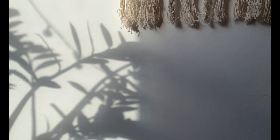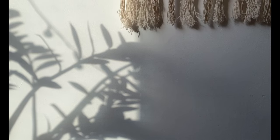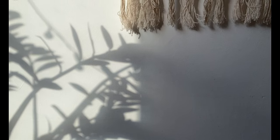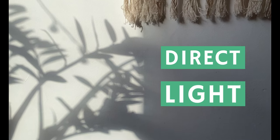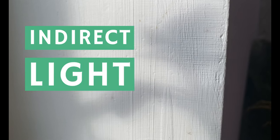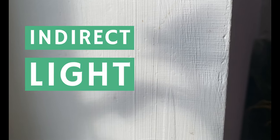Another way to know if your plant is receiving direct or indirect sunlight is to look at the shadow. If the shadow of your plant is very sharp and well defined, she is receiving direct sunlight. If during the day your plant has a more fuzzy shadow or doesn't have any shadow at all, she is receiving indirect sunlight.